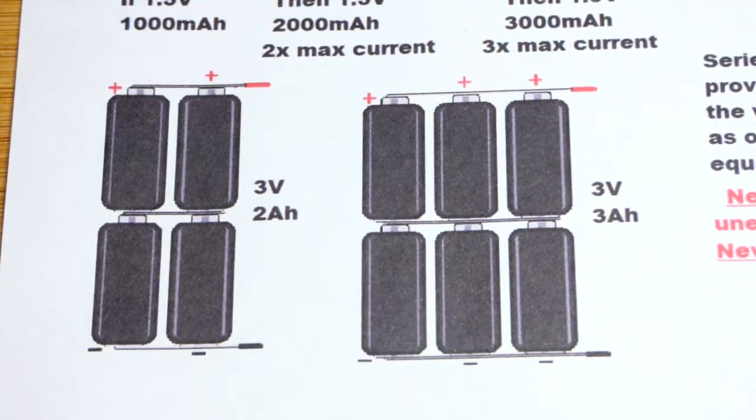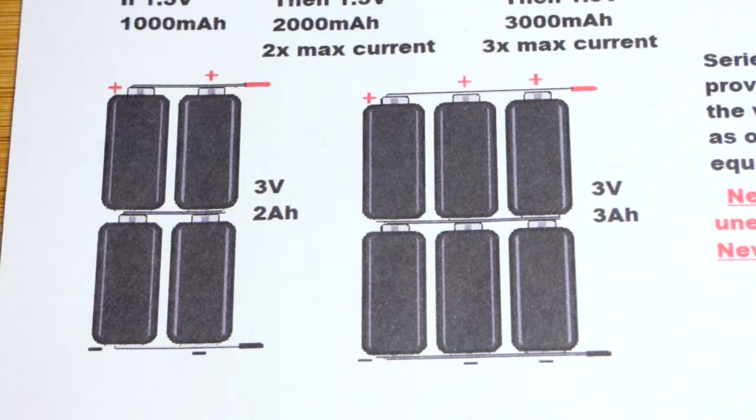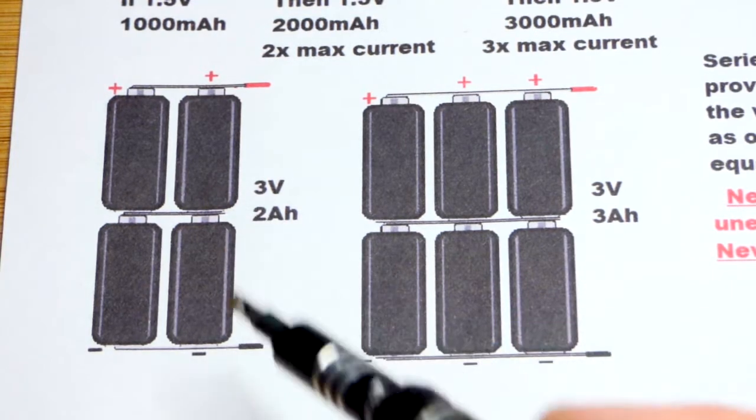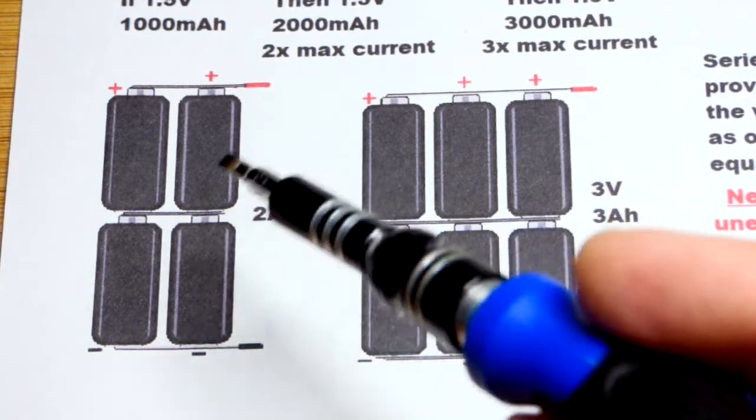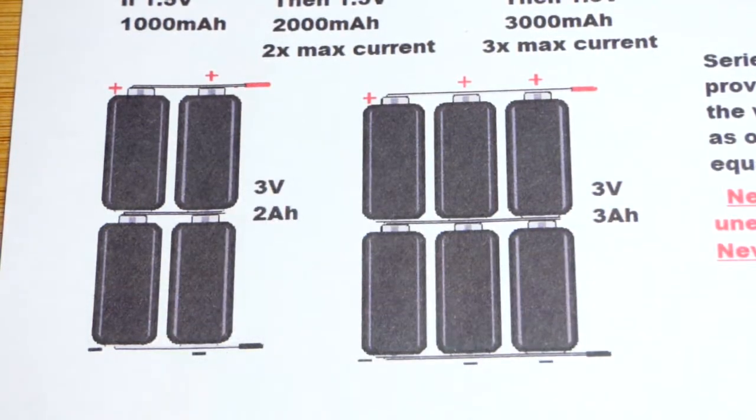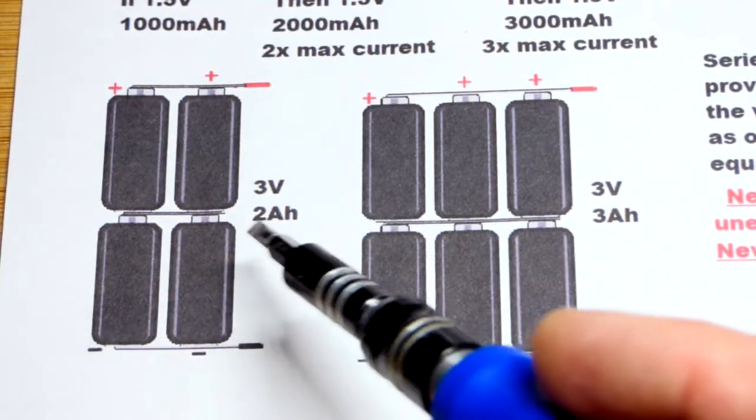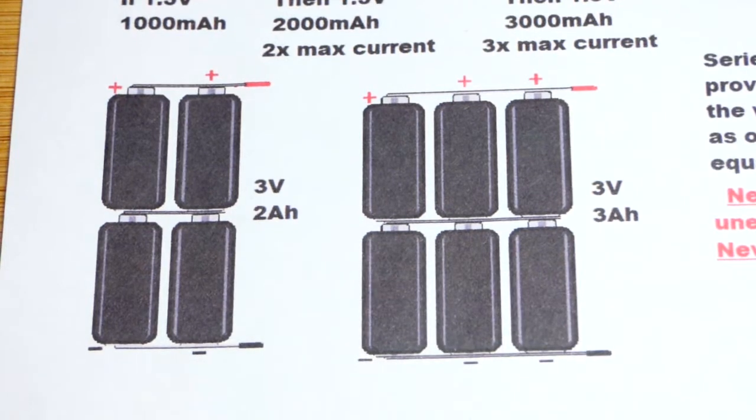Now that brings us to series parallel. What you'll see a lot in large applications like solar battery banks: you take solar power charging battery banks, you're going to see them in series so they get up to the voltage that you need, and then in parallel so they can handle the current that you need.